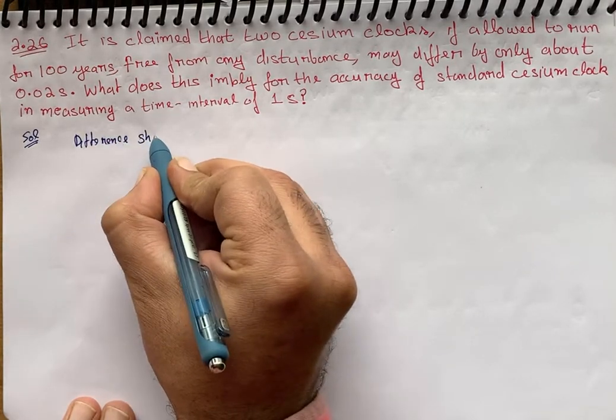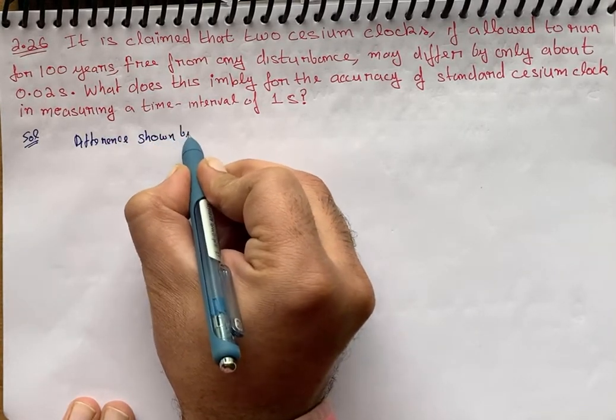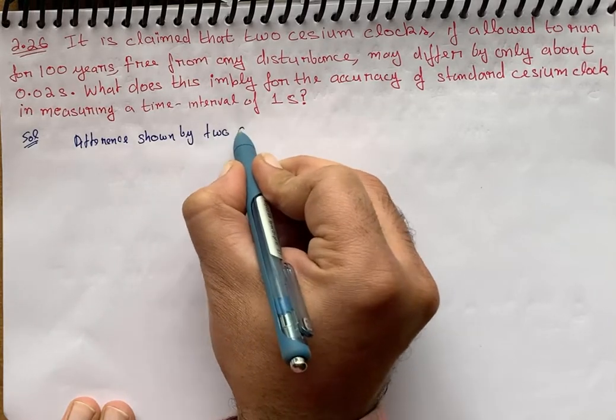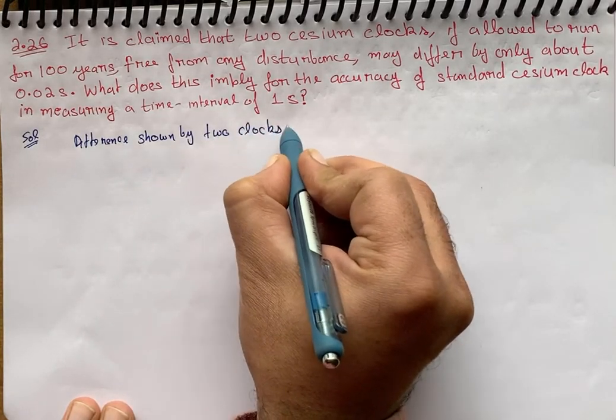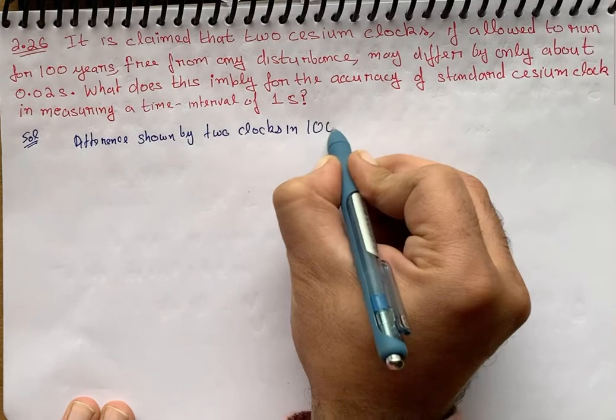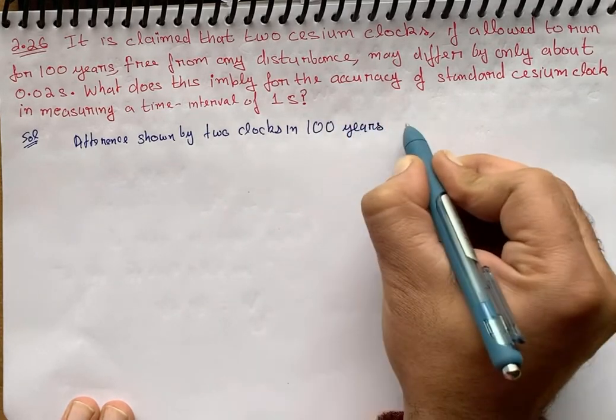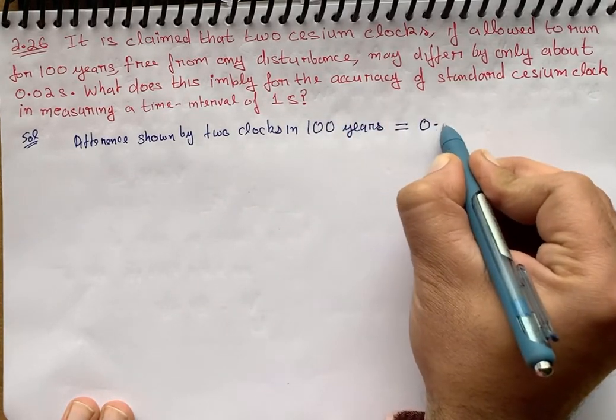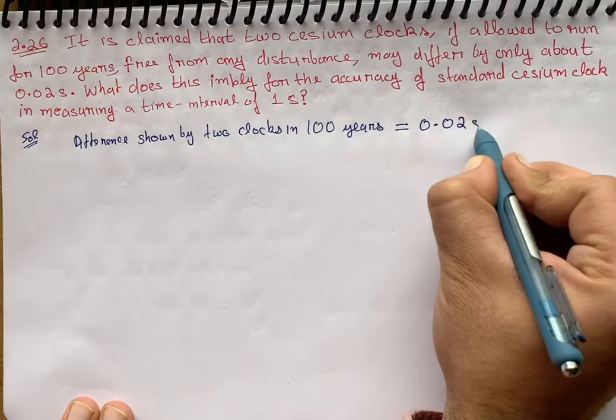The difference shown by two clocks in 100 years is just 0.02 seconds.